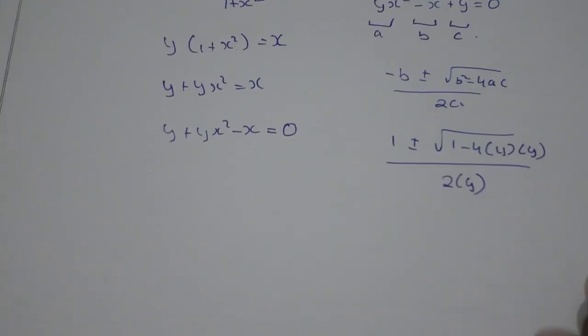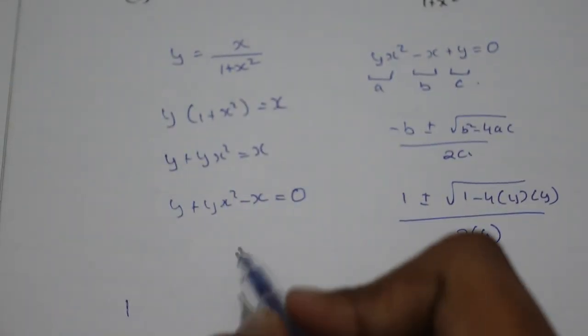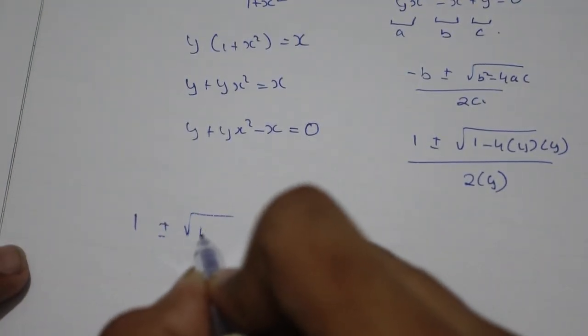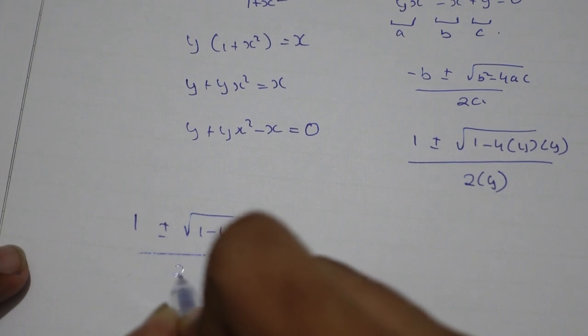Now if we solve this further, we will get (1 ± √(1-4y²))/2y.